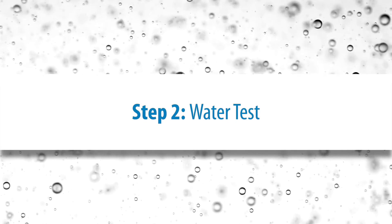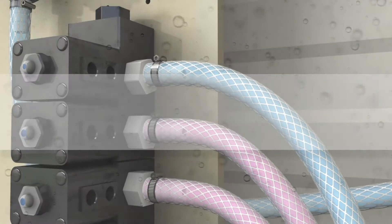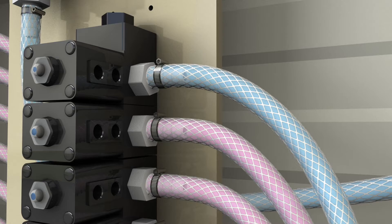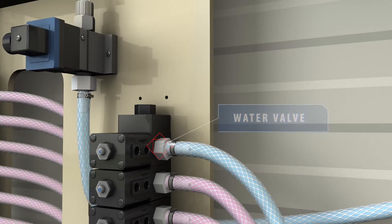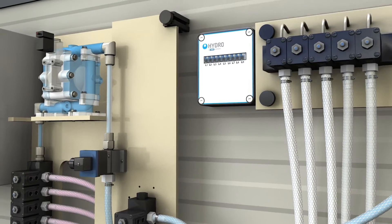Step 2: water test. After a successful leak test, it's time for the water test. The water valve at the collector is already open and now the distributor valve associated with the washer is opened.